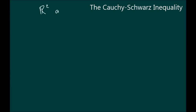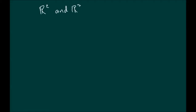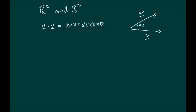In geometry, as we know, in R2 and R3, we have one of the identities or definitions of the dot product, which states that u dot v is, in fact, the norm of u times the norm of v times cosine of theta. In 2D, this is u and this is v, and this is the angle between u and v. This is great for R2 and R3 where one can calculate an angle, but it becomes a bit more challenging if we try to go beyond R3.